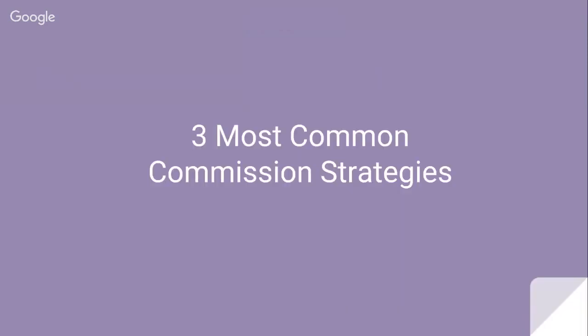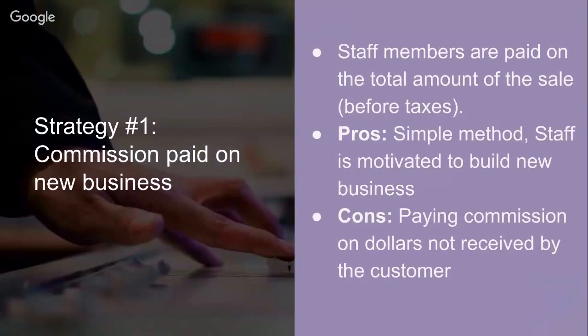The first commission strategy is paid on new business. Every time a bride comes in and pays — whether it's full payment or 50% down — when she places a new order, the full amount of that order or sale becomes commissionable and the commission is calculated based on the full amount of the sale. That's the most popular way we've seen. The commission amount is before taxes. It's a very simple method to calculate and it motivates staff to build new business. One potential downside is that you can pay commission on dollars not yet received — if a bride cancels her order, you might have already paid the consultant.